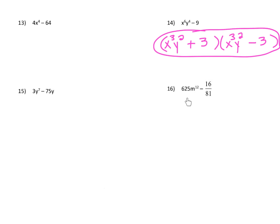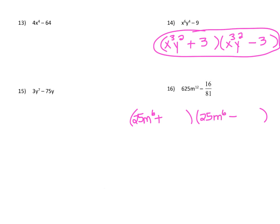Number 16. This is a fraction and a whole number, so there's probably not a greatest common factor to pull out. We have a difference, and 625 is a perfect square — the square root of 625 is 25, because 25 times 25 gives you 625. And m to the 12th: since it's an even exponent, it's a perfect square. Set up two sets of parentheses — one addition and one subtraction. The square root of 625 is 25, and to take the square root of m to the 12th, cut the exponent in half: half of 12 is 6, so the square root is m to the 6th. m⁶ times m⁶ gives m to the 12th, since we add exponents when multiplying same-base terms.